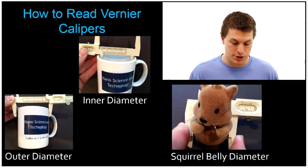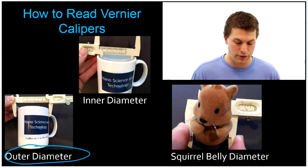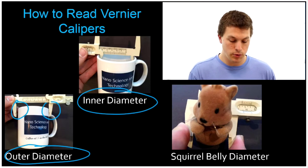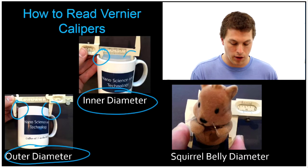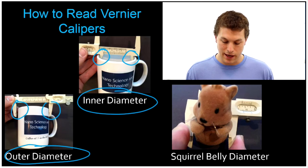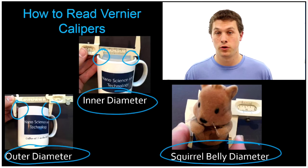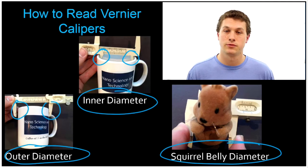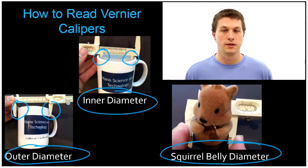We're going to measure the outer diameter of a coffee mug using these big claws on the front, the inner diameter of a coffee mug using these little back claws, and finally we're going to see how fat our squirrel is by measuring the squirrel belly diameter, which is probably the most important example. We're going to do three examples of reading vernier calipers to the correct number of sig figs.